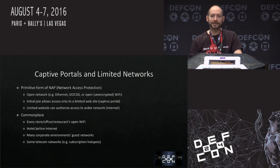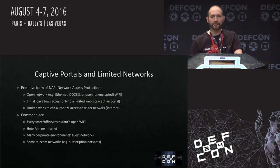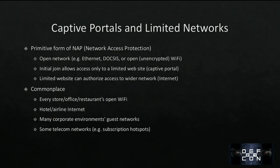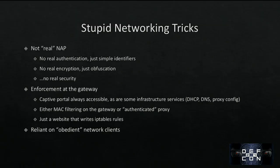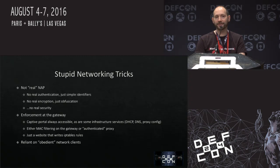So, captive portals are a very primitive type of network access protection. They consist of an open network — either ethernet, DOCSIS, or open WiFi, usually open WiFi. On initial join, you can only go to one website, the captive portal, and it doesn't let you into anything else. That limited website can then authorize access to more. You've seen these everywhere: every store, office, restaurant WiFi, hotel and airline internet, guest networks at corporations, and even some telecom subscription hotspots. These are not real network access protection. They're not using 802.1X, they're not using real cryptography. They are attempting to put a small barrier in front of you that they hope you don't know the way around. As a result, they don't have a real security boundary and they're pretty easy to circumvent.